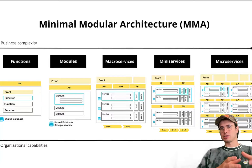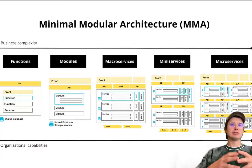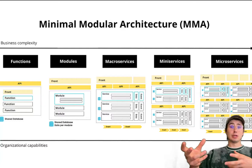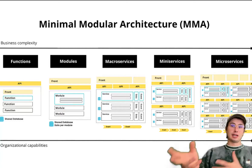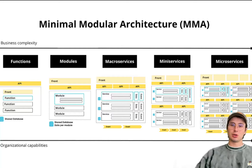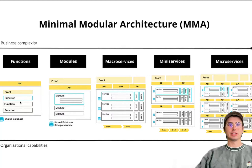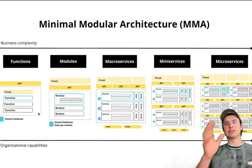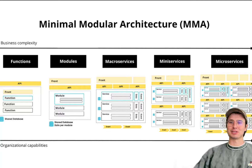This separation of concerns allows developers to work on individual components without affecting the others, making the codebase easier to understand and maintain, as well as promoting flexibility by enabling replacement or modification of one module without impacting the entire system. Modular systems also lead to higher code reuse since individual modules can be repurposed for different applications. You can see an example broken down with microservices, mini-services, macroservices, all the way up to functions — showing how responsibilities are divided further as you go down the modular path.